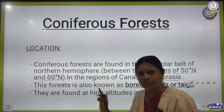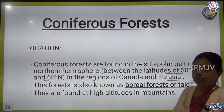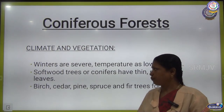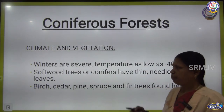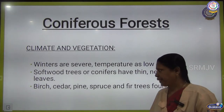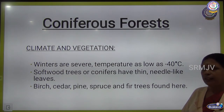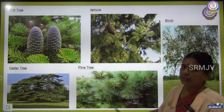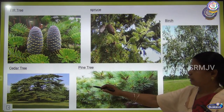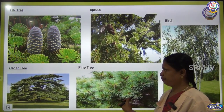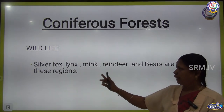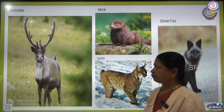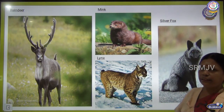The winters in coniferous forest are very severe, with temperatures going as low as minus 40 degree Celsius. Softwood trees are found here and the leaves are thin and needle-shaped. Trees like birch, cedar, pine, spruce, and fir are seen in this region. Animals found here include silver fox, lynx, mink, reindeer, and bears. You can see pictures of reindeer, mink, lynx, and silver fox.